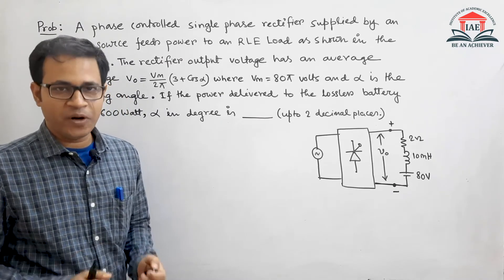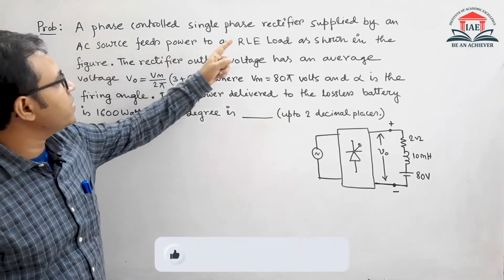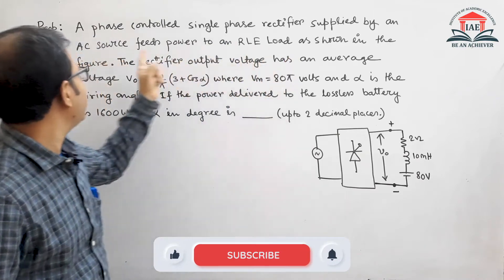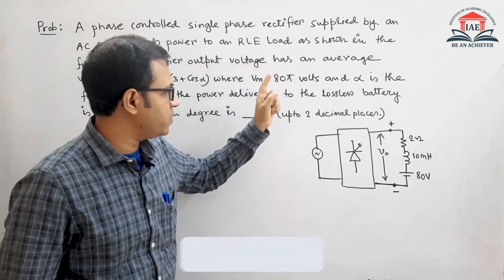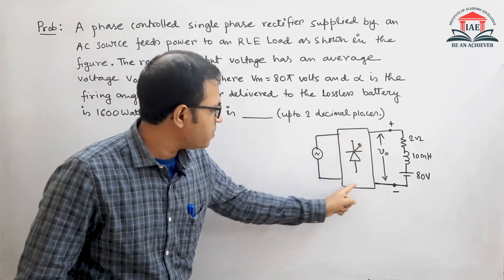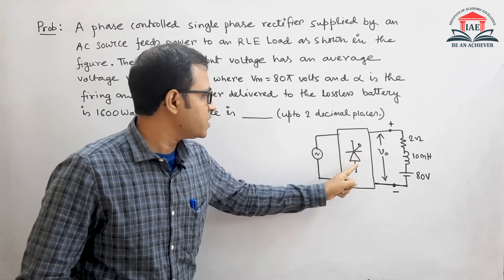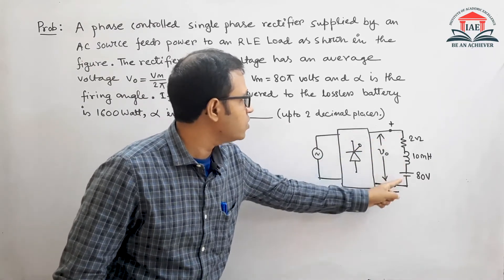The problem states that a phase controlled single phase rectifier supplied by an AC source feeds power to an RLE load as shown in the figure. The figure shows an input voltage, a block diagram for the single phase controlled rectifier, and the output voltage with the given loads.